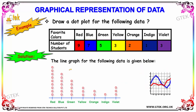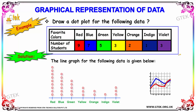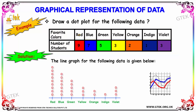Let's go with an example of how to draw or plot the dots for the following data. We have a tabulation which contains the favorite color and the number of students. For red it's 9, blue it's 7, and we have green, yellow, orange, indigo, and violet.